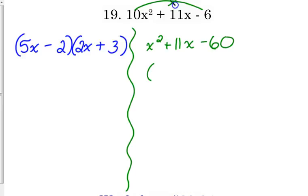Then my question is, factors of 60 that add to give me 11. Well, that would be 15 and 4. I figured that out a little bit quicker than I did the other one. The first sign is positive, so that means the bigger number, 15, gets the positive sign. Now we've got to divide.